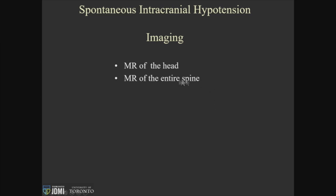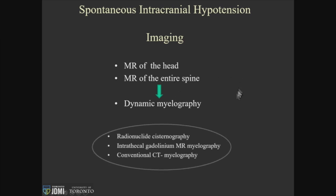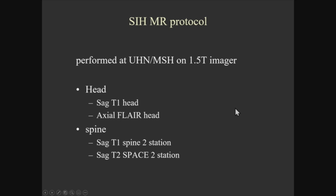Our approach is basically: patients first come to us with an MR of the head and an MR of the spine — we do a complete MR of the spine. They eventually go on to some form of dynamic myelography. A lot of these patients have already had epidural blood patching. If they haven't, they get one before the dynamic myelogram. Radionuclide cisternography, intrathecal injection of gadolinium, and conventional myelography really haven't helped us at all. Our protocol includes sagittal T1, axial FLAIR, T1 of the entire spine, and high-resolution T2 space imaging. We're looking for spinal longitudinal extradural collections. We don't give gadolinium, and I'll explain that later.